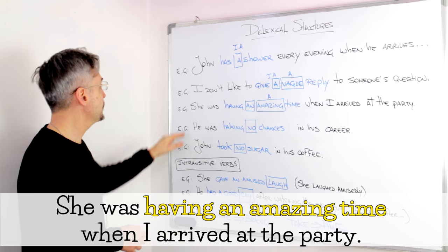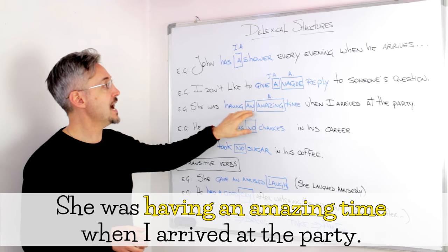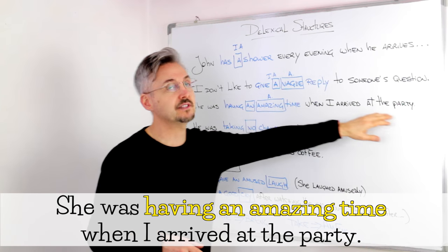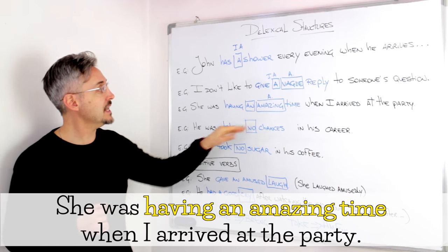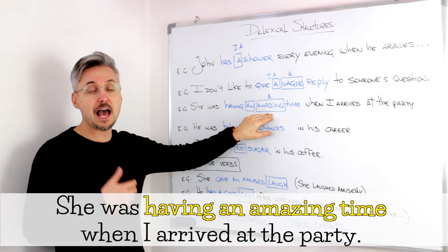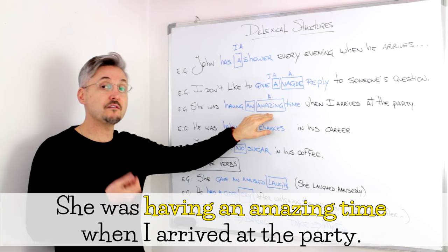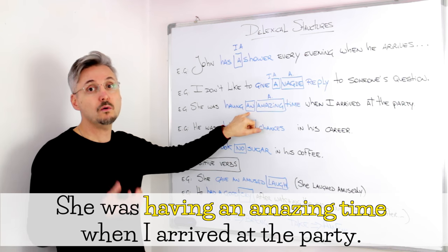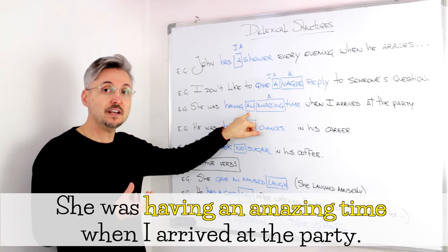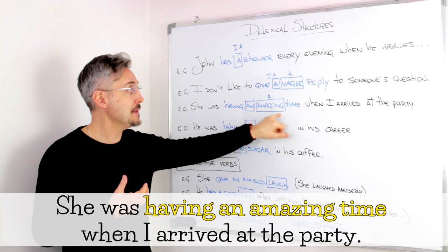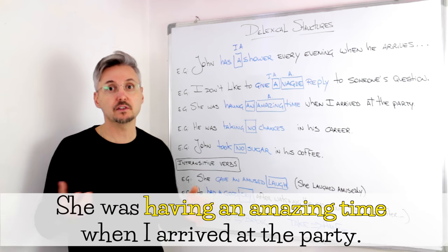Another example could be, She was having an amazing time when I arrived at the party. In this case, we have the adjective, amazing, and so it starts with a vowel sound. And so, we have the indefinite article, an, an amazing time. Time, obviously, is the noun.